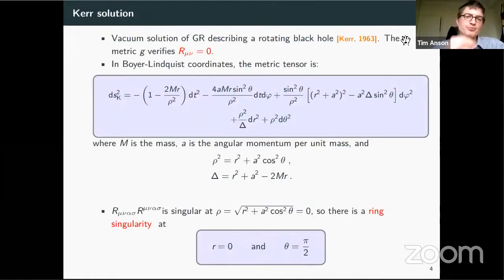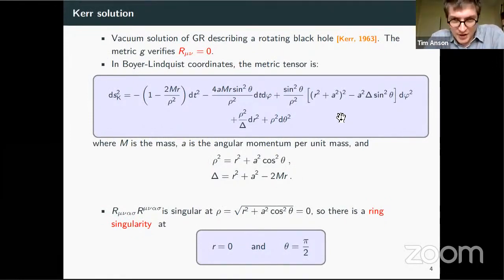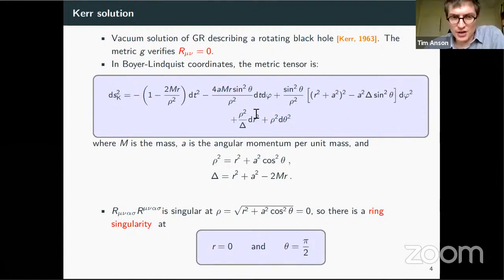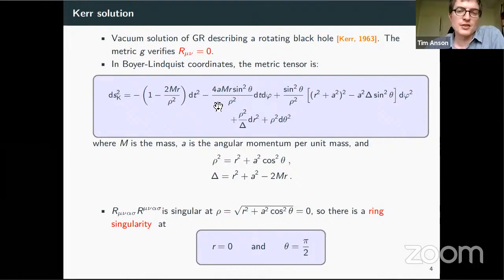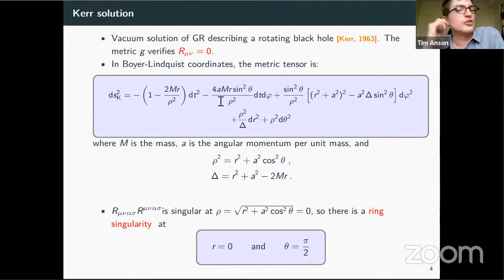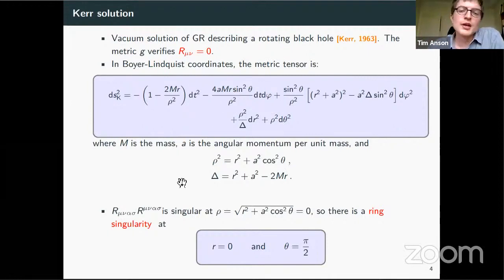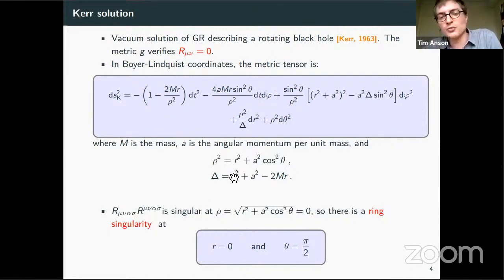Let me start with one slide about the Kerr solution, which will be our starting point. This is the vacuum solution in GR for a rotating uncharged object. I've written the Kerr line element in the Boyer-Lindquist coordinates, which has the advantage that there's only one off-diagonal term. I've introduced the standard functions: rho squared is r squared plus a squared cosine squared theta, and delta is the standard null-bar function. Here m is the mass of the object and a is the angular momentum per unit mass, or spin.